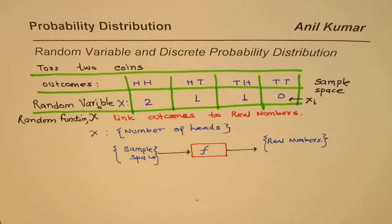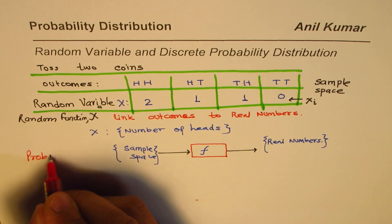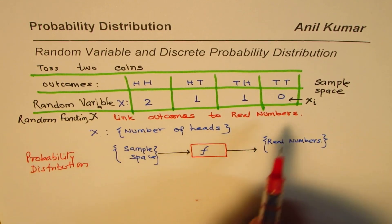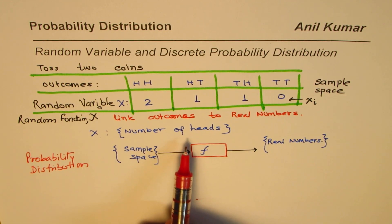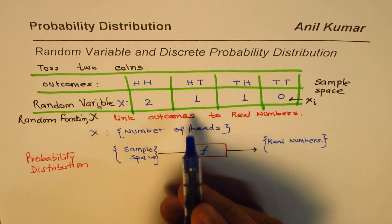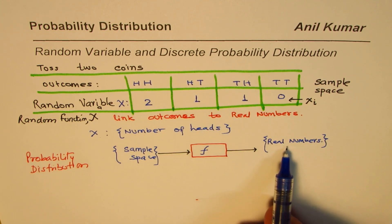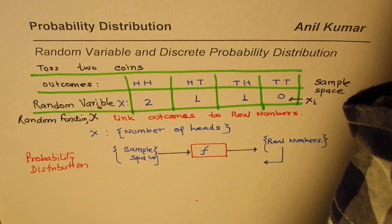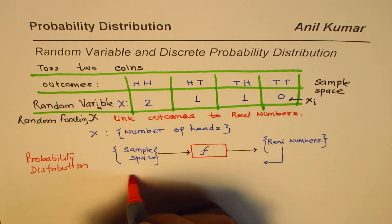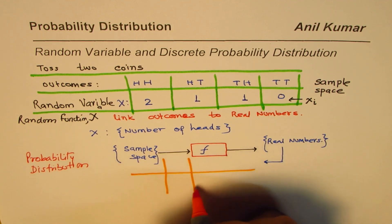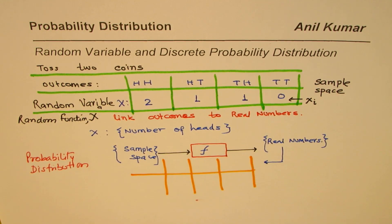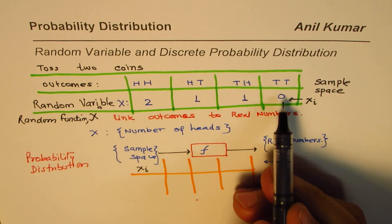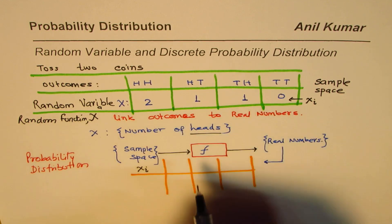That is the probability distribution — writing the probability for our random variable. Let me copy the table and this time use the outputs — the real numbers. We'll write X, the outputs of our random variable, on the top and then associate probabilities for those. The output could be 0, 1, or 2 heads.